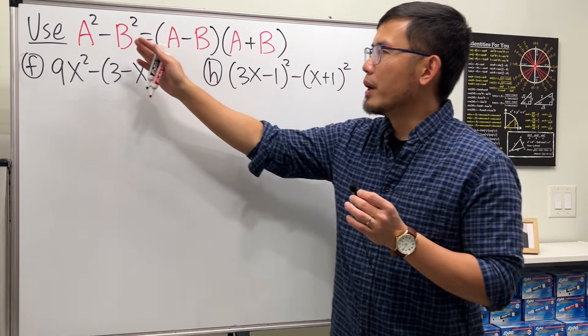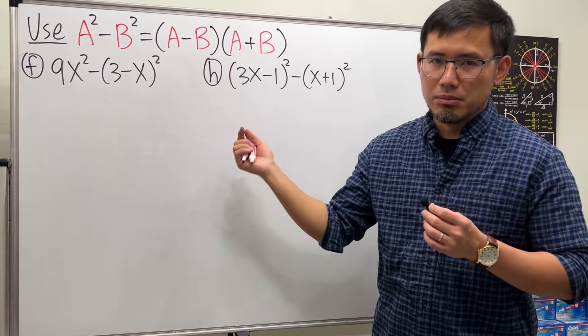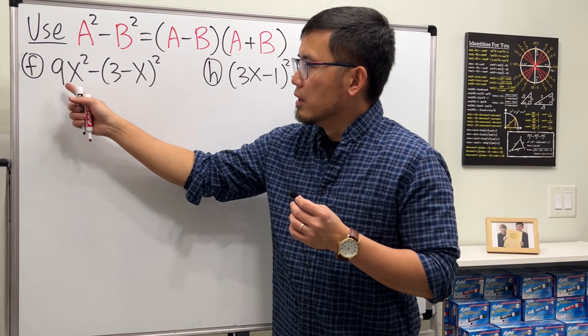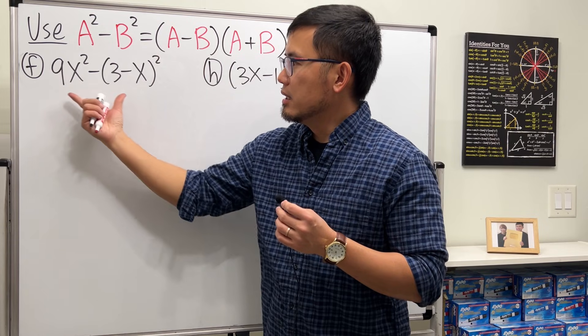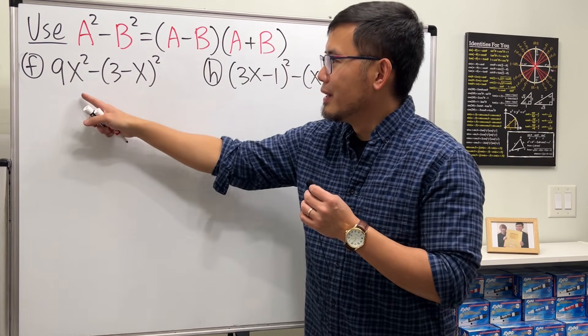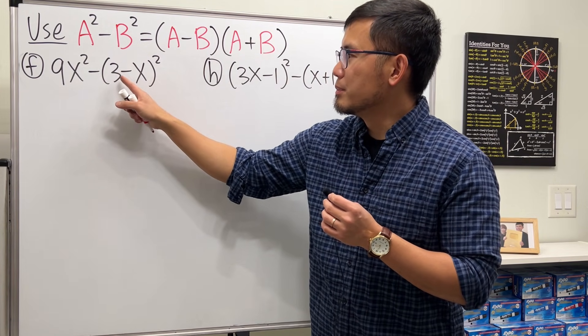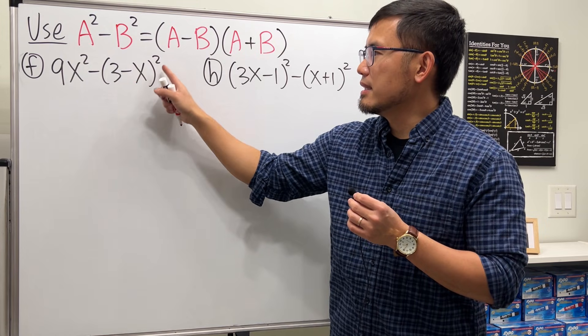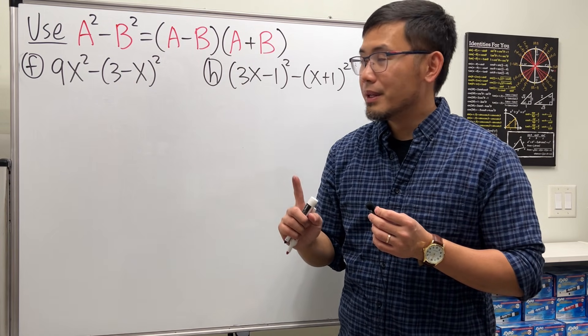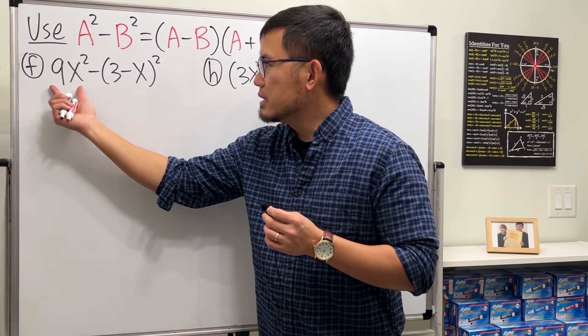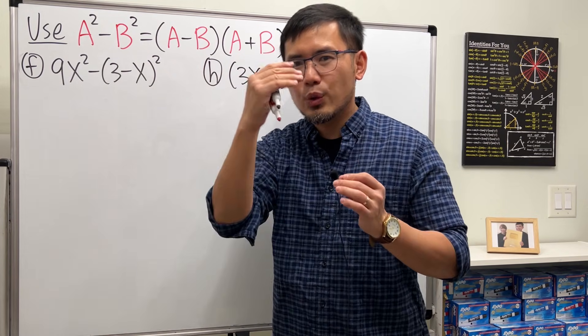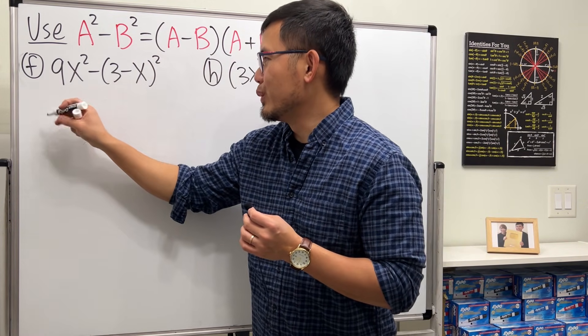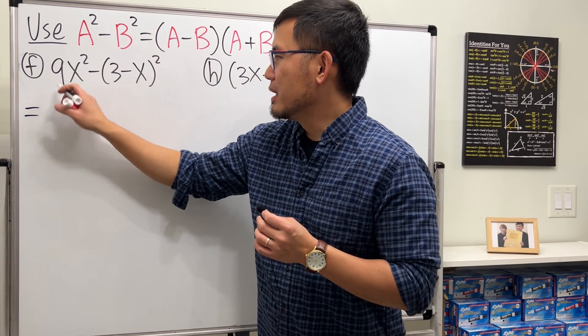So let's take a look at this question F. We have 9x² minus parentheses 3 minus x and then square. Well, the key right here is that this is not an A² yet. Check this out, we will have to rewrite this first because for the 9 we have to somehow put it in parentheses and then square that like this.